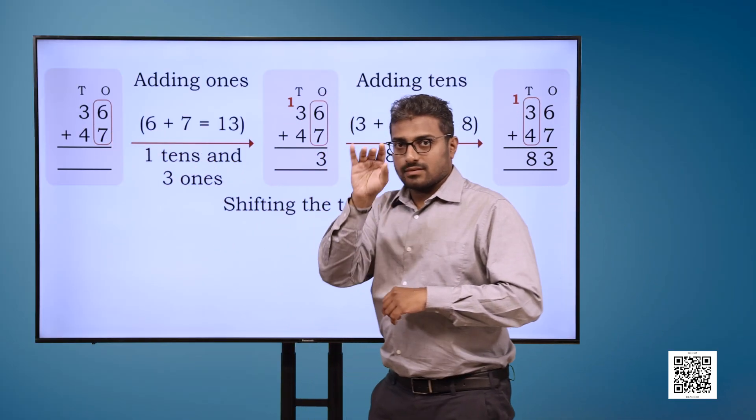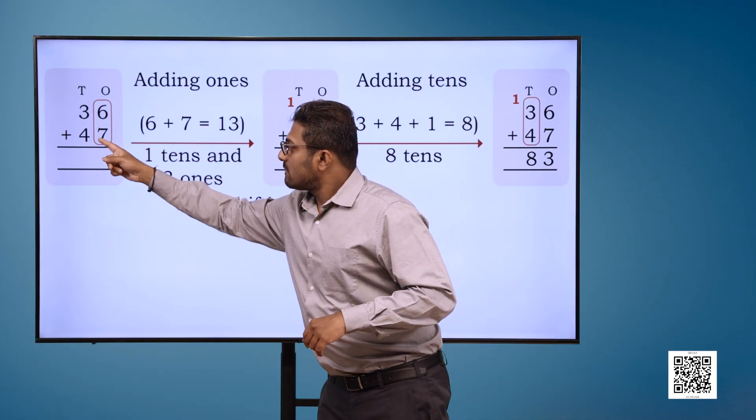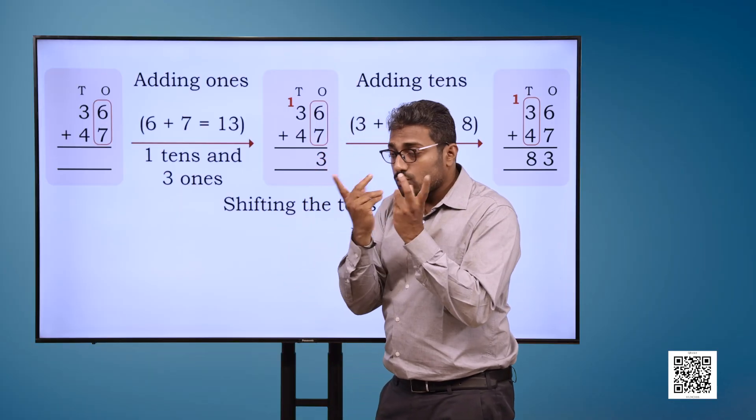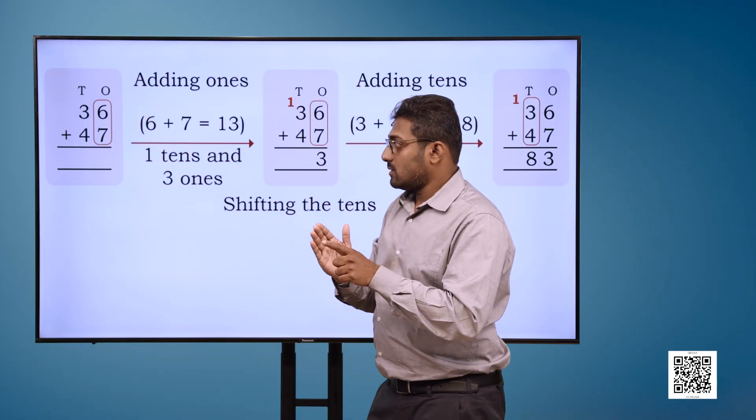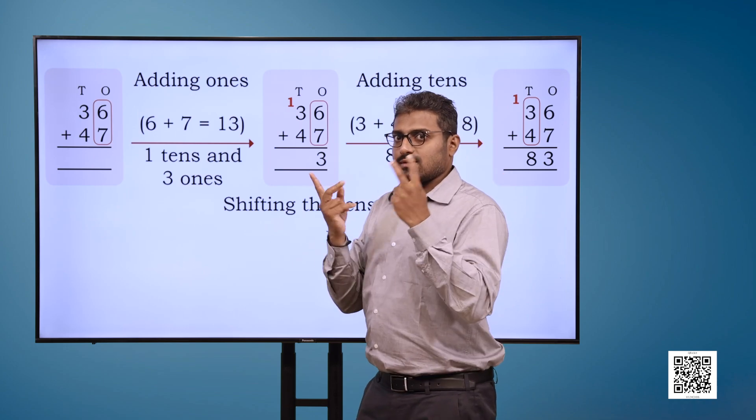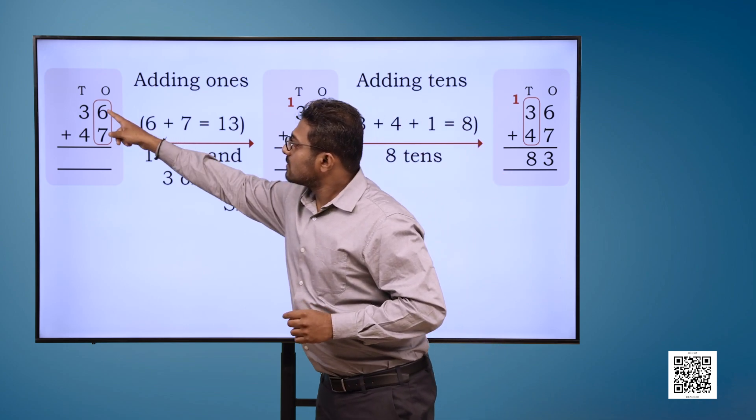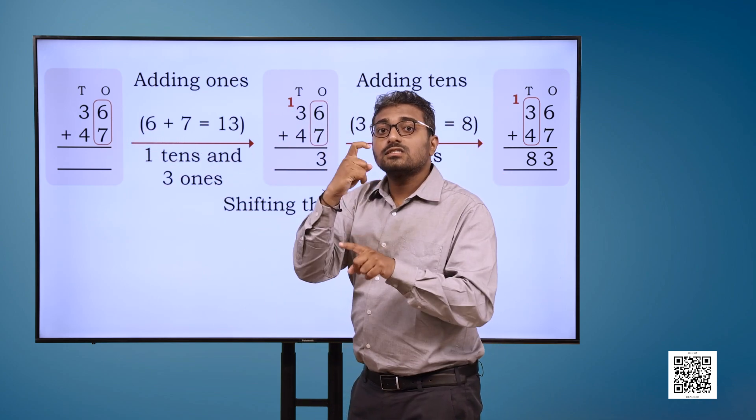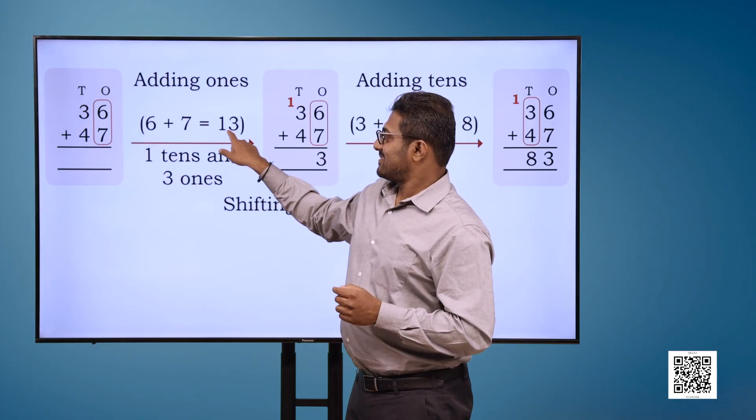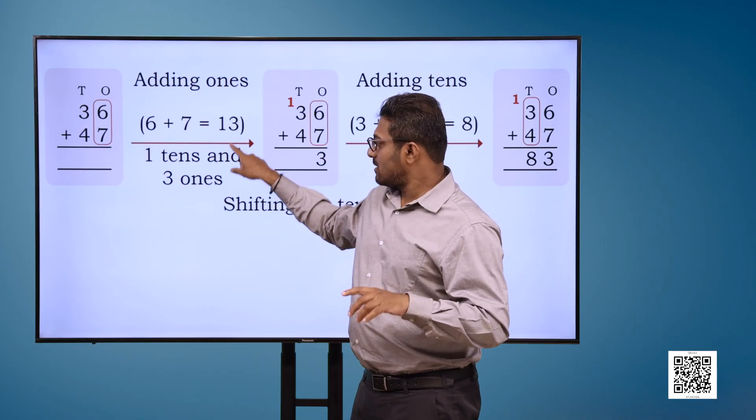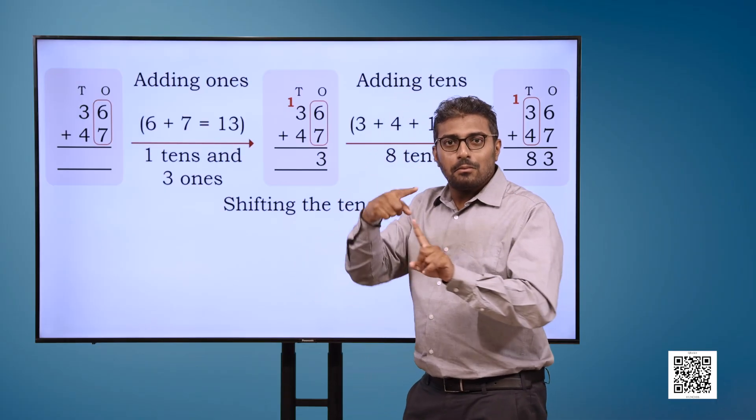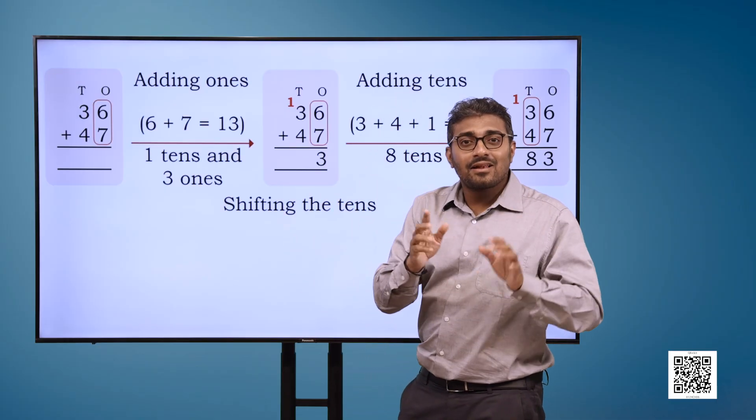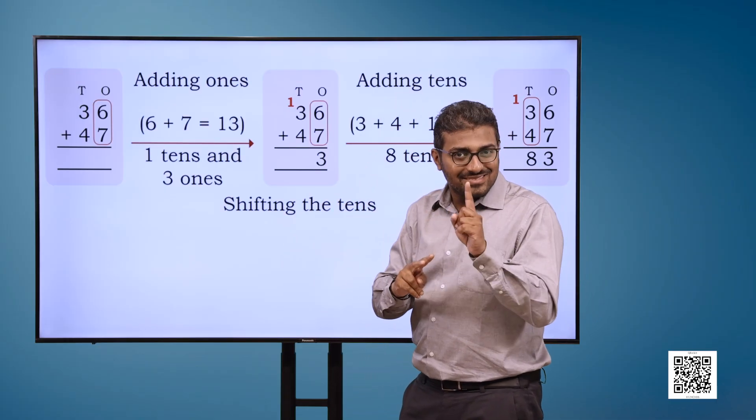We'll add 36 with 47. In 36, 6 is at one's place and in 47, 7 is at one's place. Now, we'll add ones. That is, 6 plus 7 is equal to 13. This means 1 ten and 3 ones. We will shift this 1 to ten's position with 3 and 4.